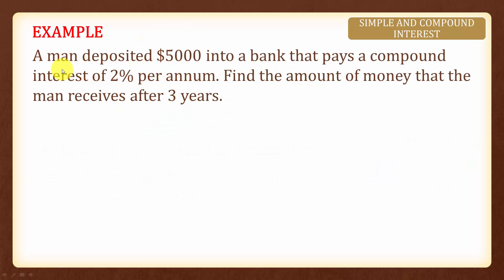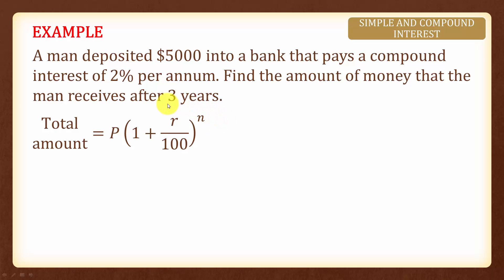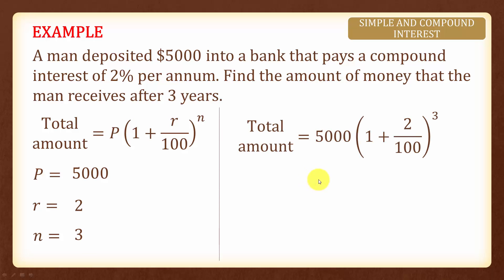Let's look back at the previous example whereby a man deposited five thousand dollars into a bank that pays a compound interest of two percent per year, and we are asked to find the amount of money that the man receives after three years. Applying the compound interest formula: P equals five thousand, the interest rate per compounding period is two percent, and the number of times compounded is three. The total amount equals five thousand three hundred and six dollars and four cents — exactly the amount we found previously.